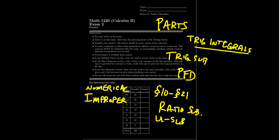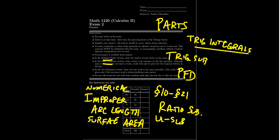We also have two applications of integration that will appear on this exam as well. This includes arc length and surface area. Just like Exam 1, there are going to be three sections on this exam: there's the multiple choice section, a short response section, and the free response section.